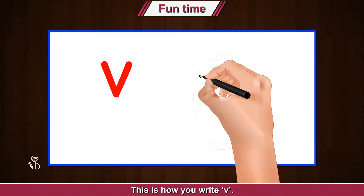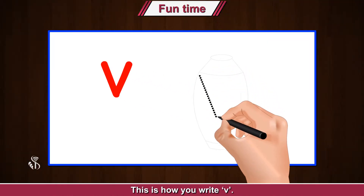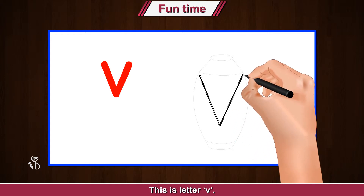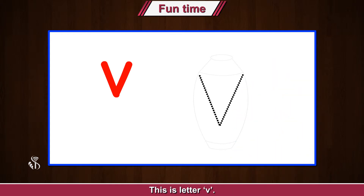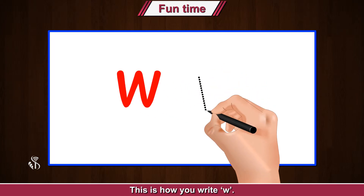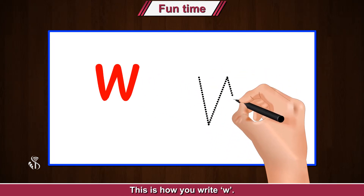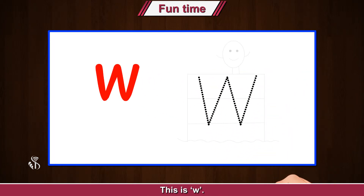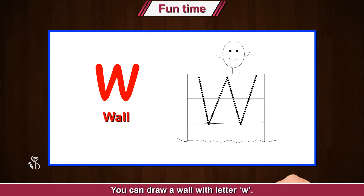This is how you write V. This is letter V. V for vase — you can draw a vase with letter V. This is how you write W. This is W. W for wall — you can draw a wall with letter W.